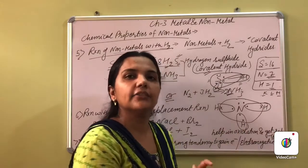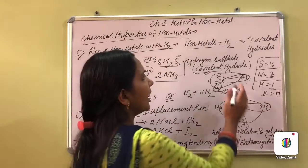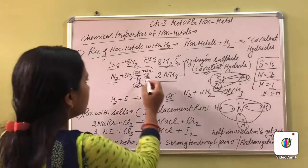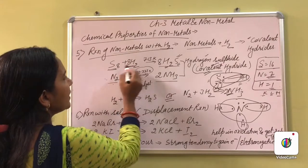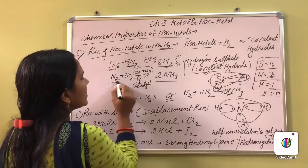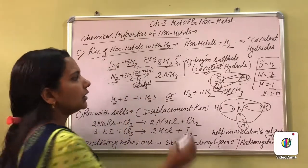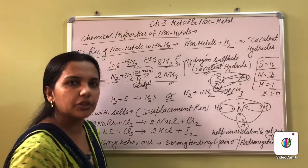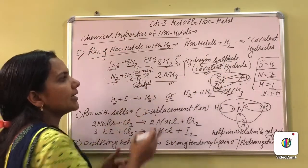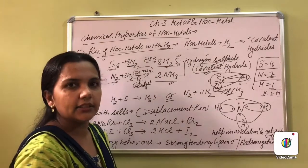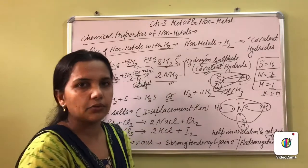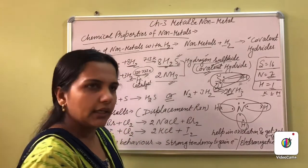In this way they all satisfy their valences by sharing of the electrons, and that is called the covalent hydrides. So whenever sulfur reacts with hydrogen, formation of hydrogen sulfide occurs, and whenever nitrogen reacts with hydrogen, it leads to the formation of ammonia. These hydrides are covalent in nature — covalent means they are formed by the sharing of electrons.